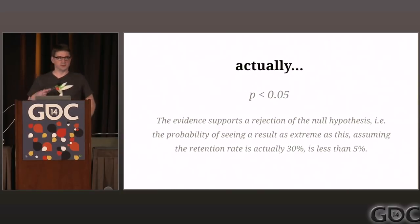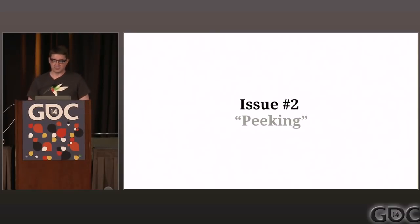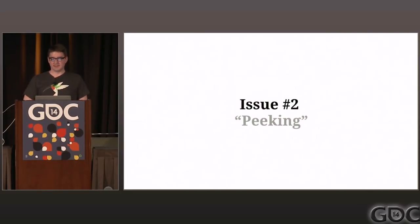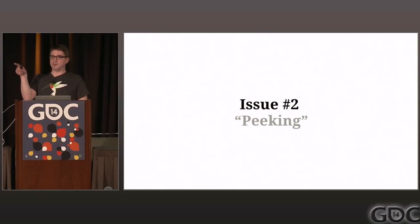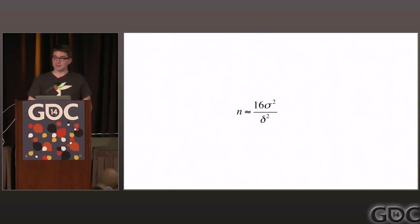The other problem with the frequentist approach is peaking. The classic thing people do is set up A/B tests and constantly observe the result, and once the p-value gets below 0.05, they say they're done. That's a really bad thing to do.